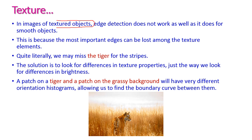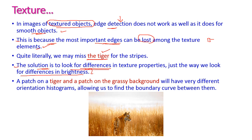In images of textured objects, the edge detection operation will not work well and does not smooth the objects either. This is because the most important edges can be lost among the textured elements since the same pattern repeats throughout the images. For example, with a tiger in the grassland, edge detection would miss the tiger. The solution is to look for differences in texture properties the same way we look for differences in brightness — the patches on a tiger and patches on a grassy background will have very different orientation histograms, allowing us to find boundary curves between them.